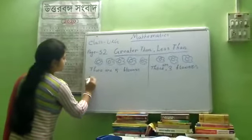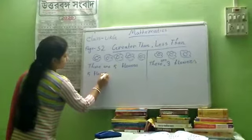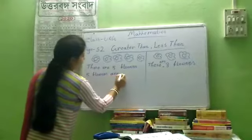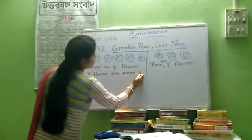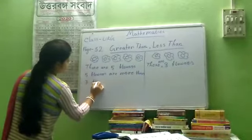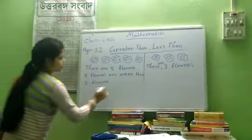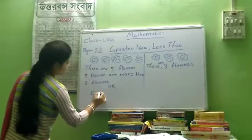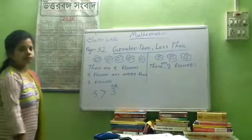Five flowers are more than three flowers. Or five is greater than three. Got it?